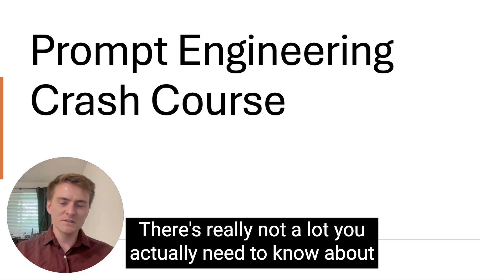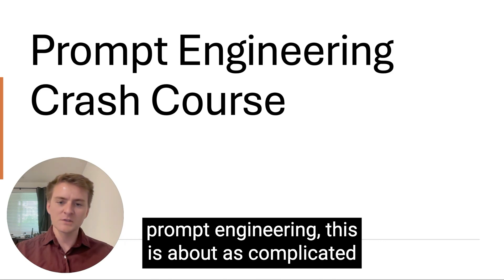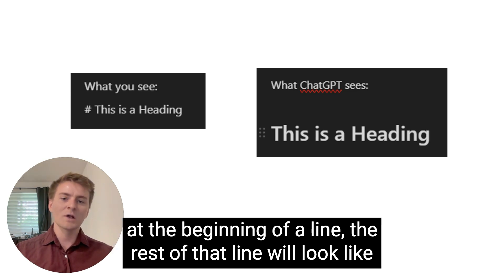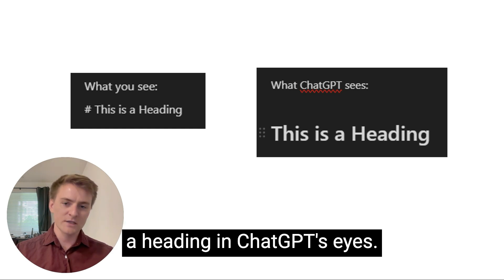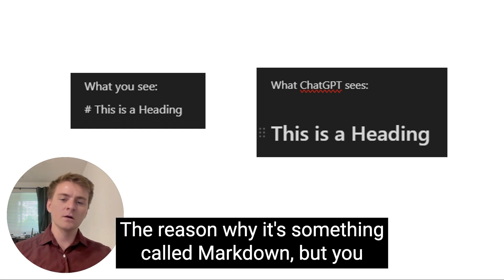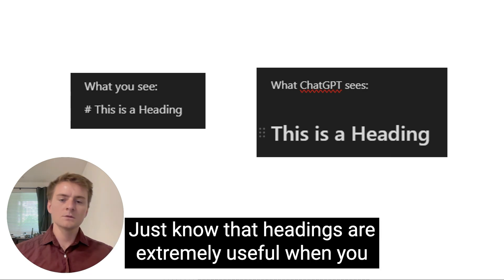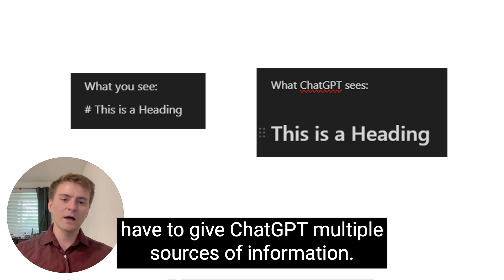There's really not a lot you actually need to know about prompt engineering — that is about as complicated as it gets for practical use. When you put the hashtag sign and then one space at the beginning of a line, the rest of that line will look like a heading in ChatGPT's eyes. The reason why is something called markdown, but you don't need to know what that is. Just know that headings are extremely useful when you have to give ChatGPT multiple sources of information.